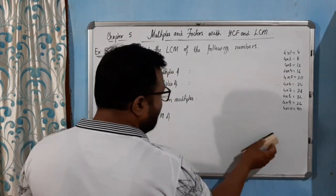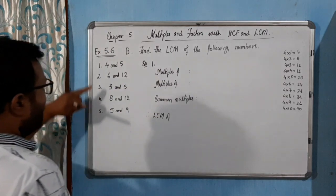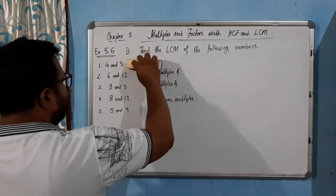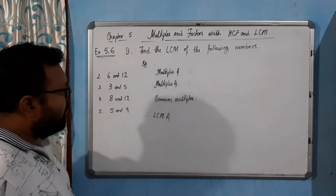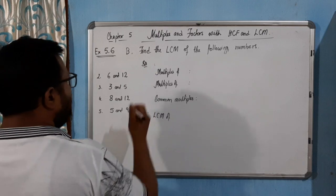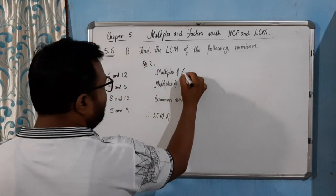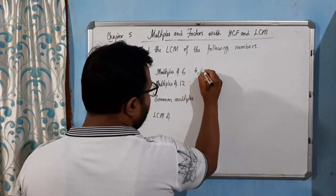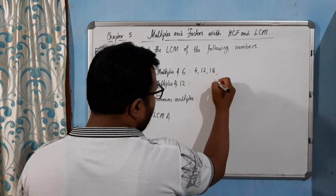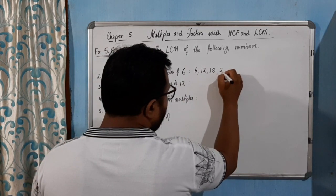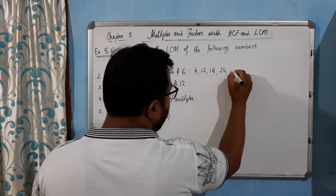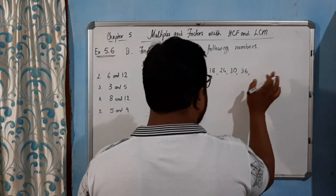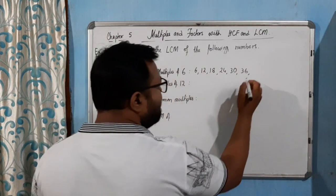For question number two, the numbers are six and twelve. Let me write the table. Six times one is six, six times two is twelve, six times three is eighteen, six times four is twenty-four, six times five is thirty, then thirty-six. I think we will get our lowest common multiple here.